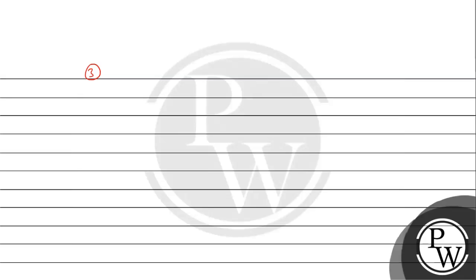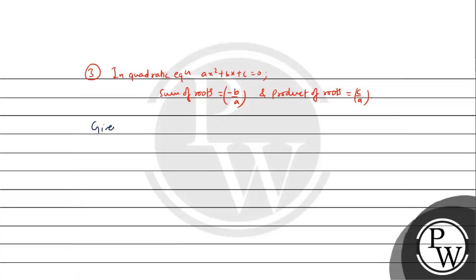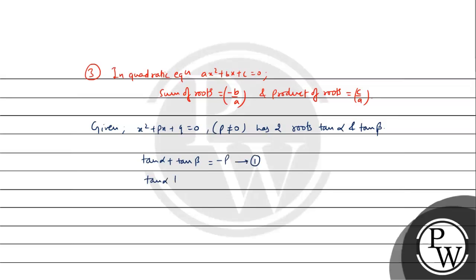In the quadratic equation x squared plus p x plus q equals 0, the sum of roots formula gives minus p upon 1, so tan alpha plus tan beta equals minus p — let us call this equation one. And the product of roots gives c upon a, so tan alpha into tan beta equals q — let us call this equation two.